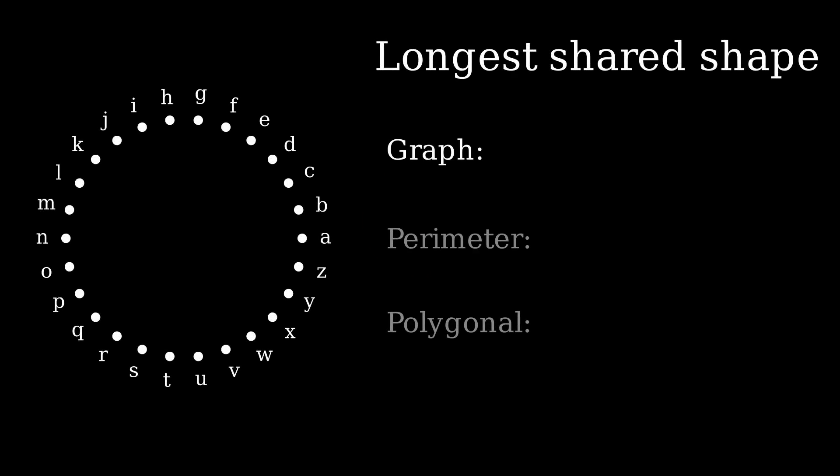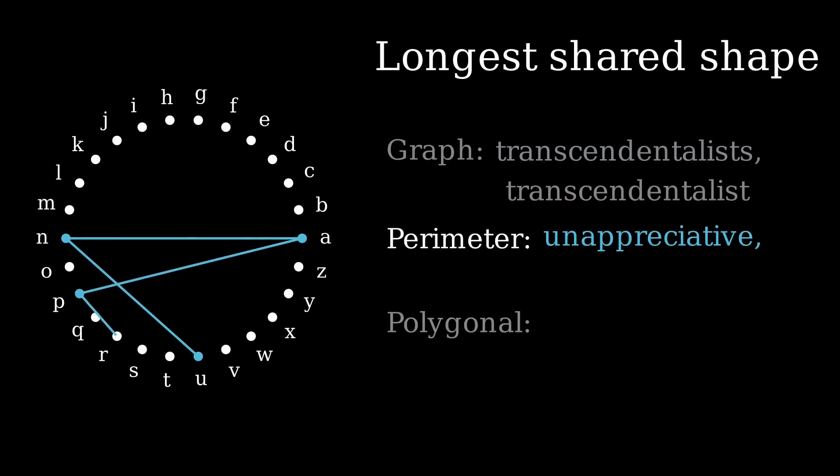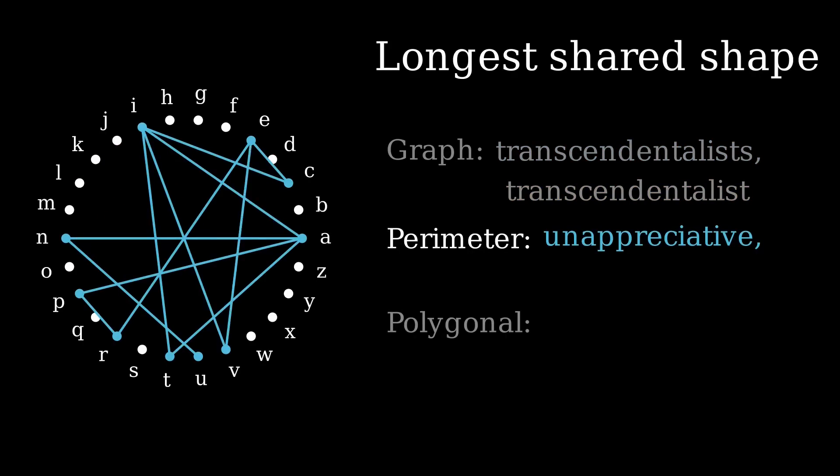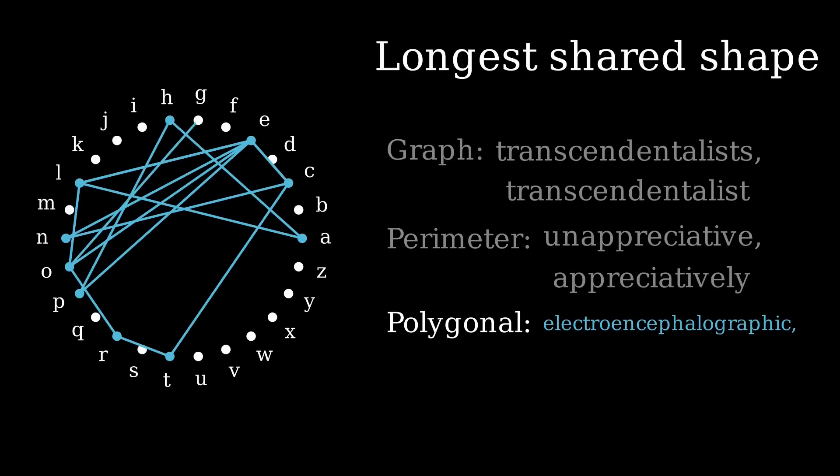The longest word that shares a graph shape with any other word is transcendentalists, at 18 letters, sharing with, unsurprisingly, transcendentalist. Unappreciative tops out the perimeter shape at 14 letters, sharing perimeter with appreciatively. At 23 letters, electroencephalographic shares a polygonal area with hypoallergenic.